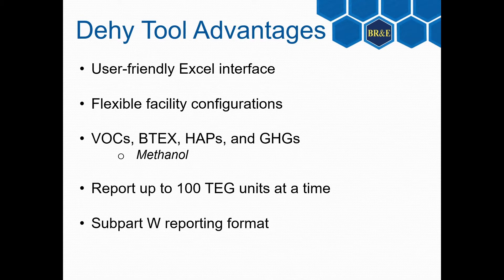The dehydration tool can simulate up to 100 facilities at a time and generate a comprehensive emissions report for each facility. This allows users to set it and forget it — define the inputs, hit run, and reports will be available for review after the tool finishes running. On top of Subpart HH, there is also an output section that satisfies Subpart W greenhouse gas reporting requirements.